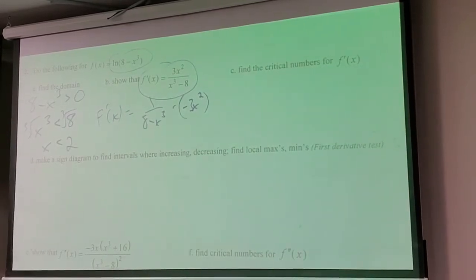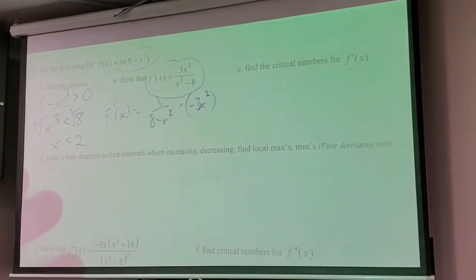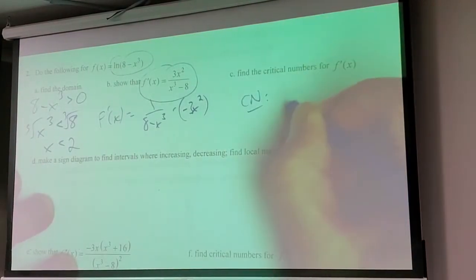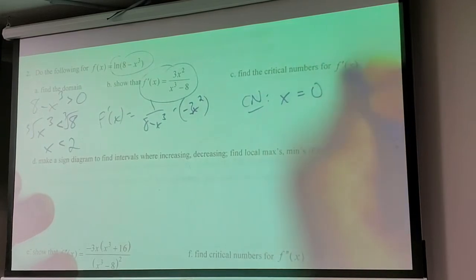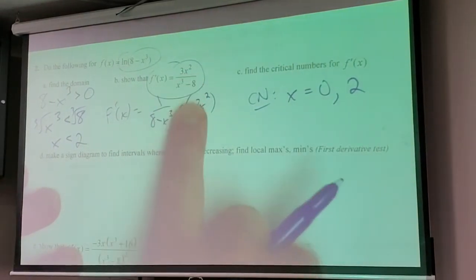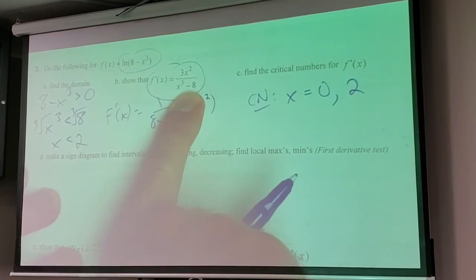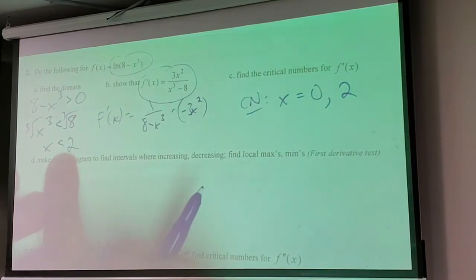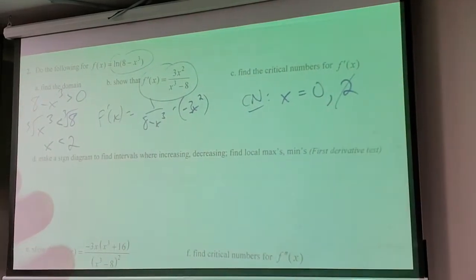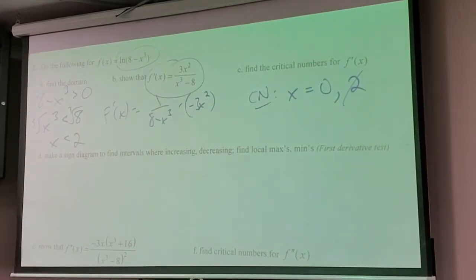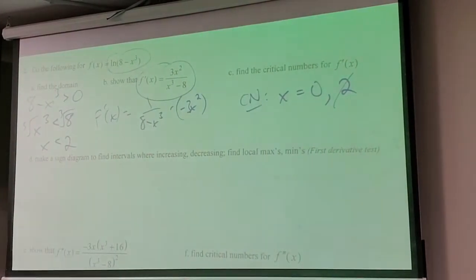What are the critical numbers? It would be 0 and 2. Zero makes the derivative zero; 2 makes the derivative undefined - but 2 is not even in our domain. So there would be a critical number at 2 only if it were part of our domain. You can list it but you want to cross it out so it doesn't come into play in your analysis later.